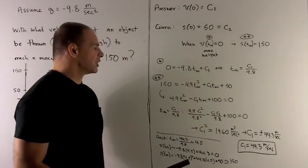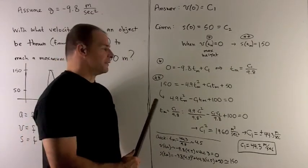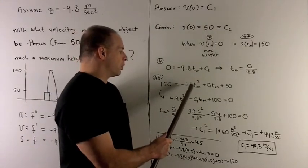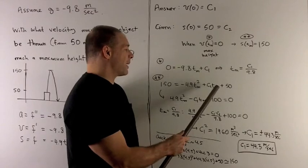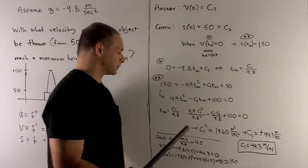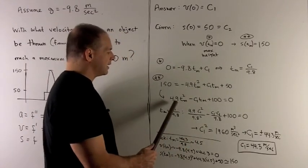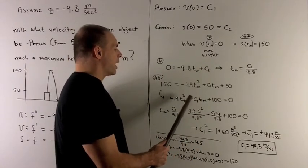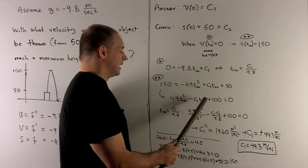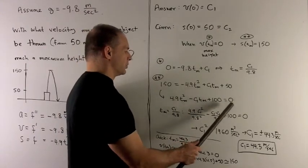I look at my second equation, this is going to tell me 150 = -4.9t_m² + c1·t_m + 50. I can move everything over to one side to get this equation. So that's 4.9t_m² - c1·t_m + 100 = 0.